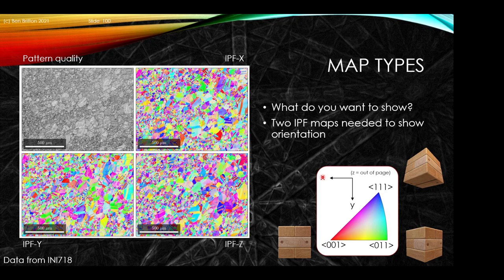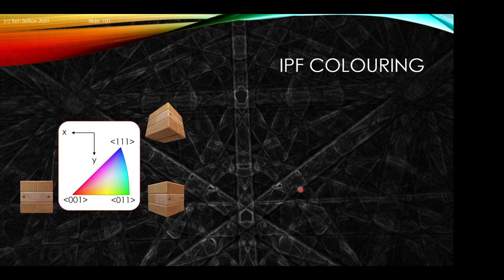The reason why you need two inverse pole figures is that if you have the 100 pointing along one axis, you could effectively have spinning of that crystal — you could rotate the unit cell about the Z axis and it would give you the same red color. It's only when you look along another axis that you see that difference.